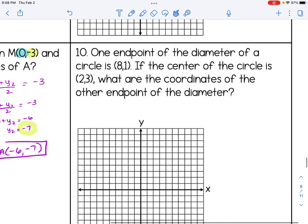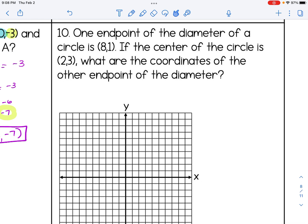For the last problem here, it says one endpoint of the diameter of a circle is (8, 1). If the center of the circle is (2, 3), what are the coordinates of the other endpoint of the diameter? For number 10, I'm going to go back to my preferred method, which is plotting and using slope, creating those little slope triangles in there. So I know that one endpoint of the diameter is (8, 1), so I'm going to plot that. I'm just going to label it as endpoint. And I know the center of the circle is (2, 3), so I'm going to label that as center, and I'm going to make a nice straight line connecting them.